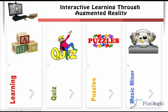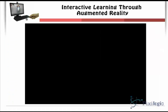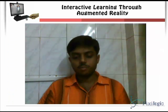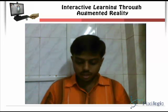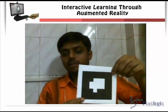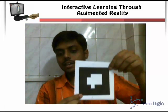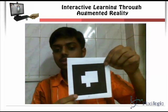Let's start with the learning module. In the learning module, we have assigned a separate marker for each alphabet. As soon as we show a marker related to an alphabet, a video pops up defining the alphabet. For example, taking a marker of alphabet A — if I remove my finger, a video plays related to A.